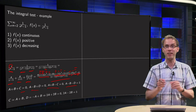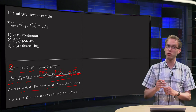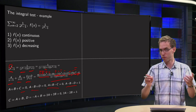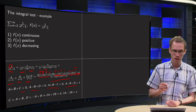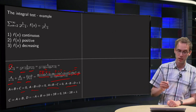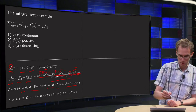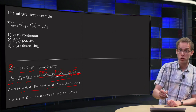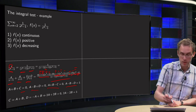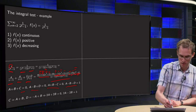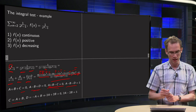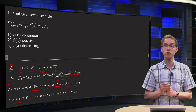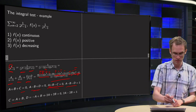So we have four linear equations to solve. We can use linear algebra with an augmented matrix, though it's a bit easier because we can solve first for C and D in terms of A and B. From the equations we find C = A + B and D = -A + B.